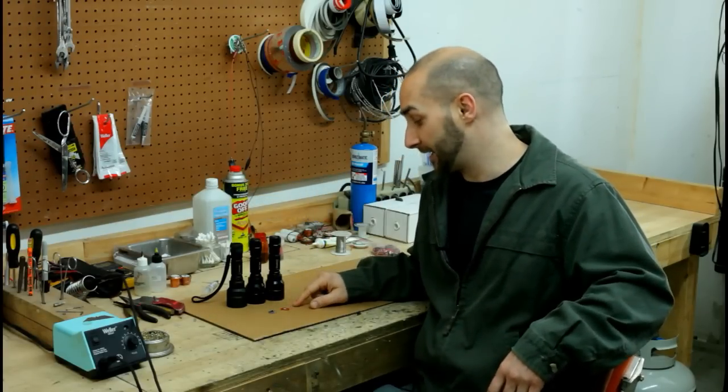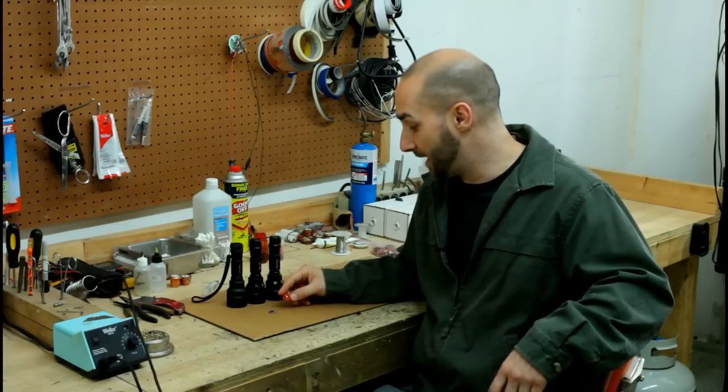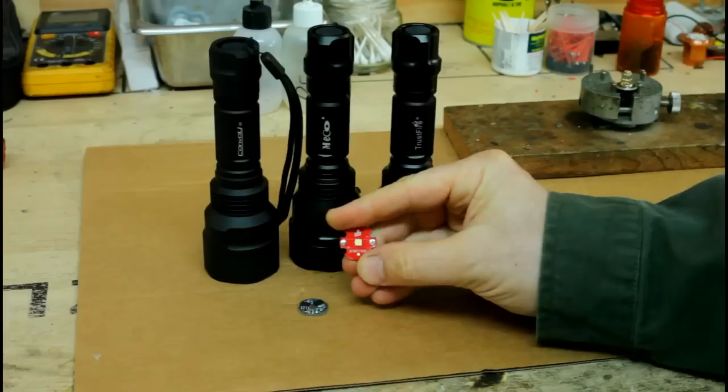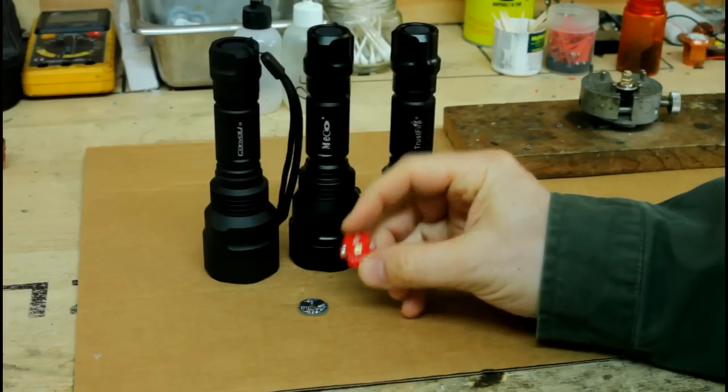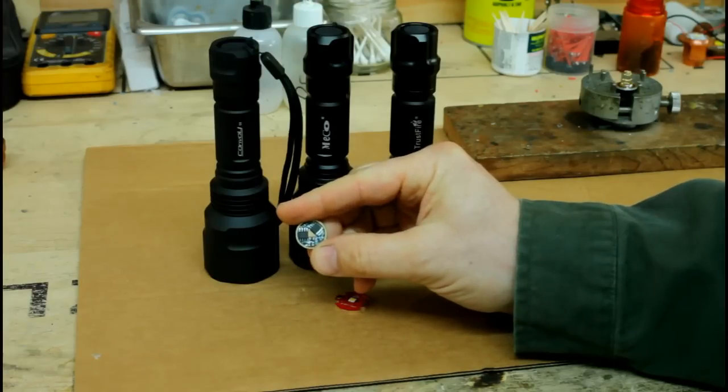The next thing that we'll need is the parts for our light engine. We'll need a Cree XPL High V3 emitter and a MOSFET driver. If you're using button-top batteries you can just put the driver in just like it is, but if you're using flat tops, you'll need to either put a spring or a copper button on the bottom.